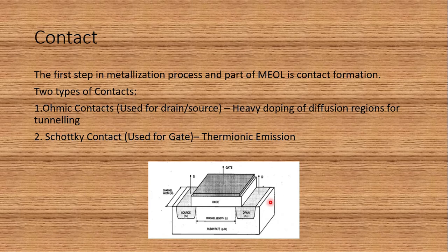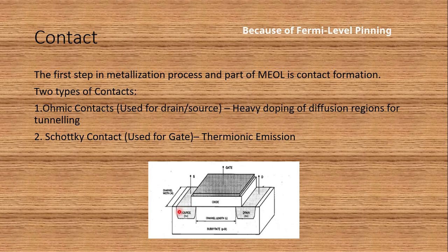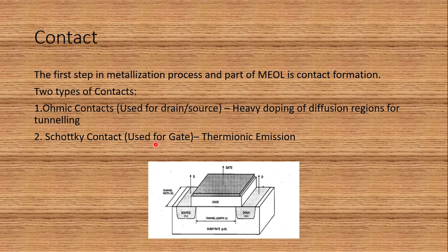There are two types of contact formation: ohmic contacts and Schottky contacts. Ohmic contacts are used in source and drain formation — the N+ regions. Whenever we have a semiconductor-metal junction, a depletion region forms, creating a Schottky diode. To avoid that, we use a highly doped region, making it an ohmic contact where current flows by quantum mechanical tunneling rather than thermionic emission. In Schottky contacts, thermionic emission is more pronounced, and they are used for gate formation.